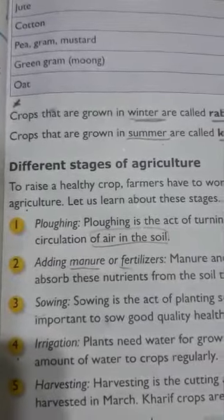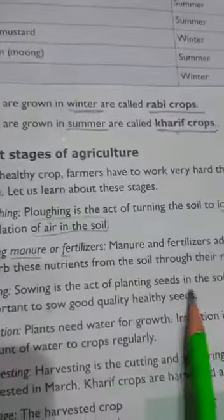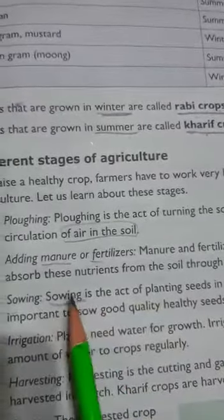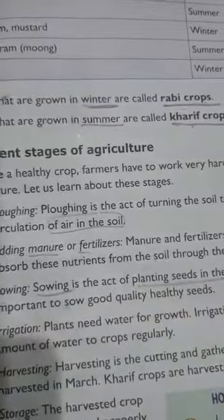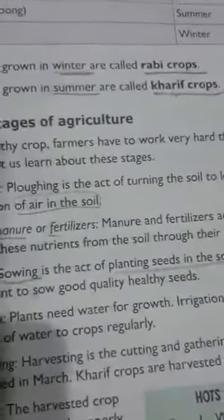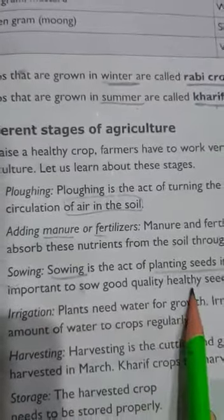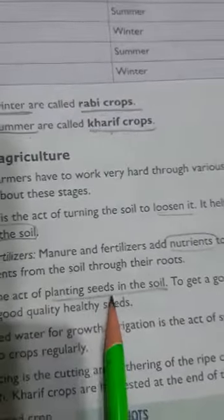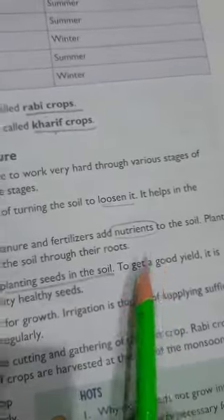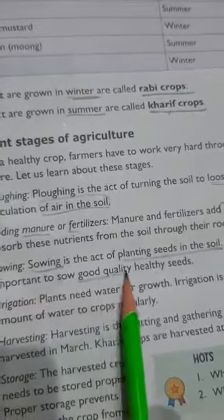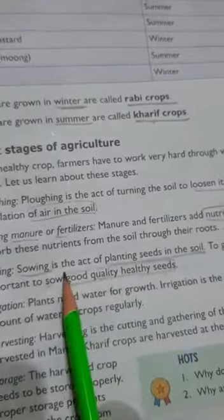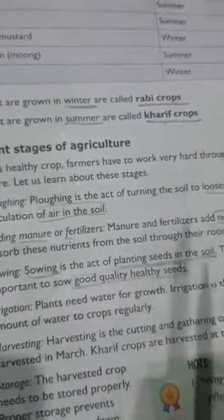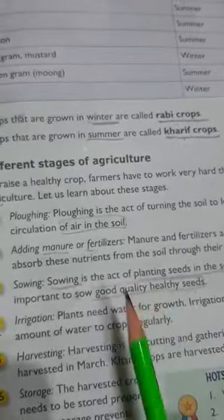The third stage is sowing. Sowing is the act of planting seeds in the soil. To get a good yield, it is important to sow good quality, healthy seeds. As you can see in the picture, they are sowing the seeds with machines.